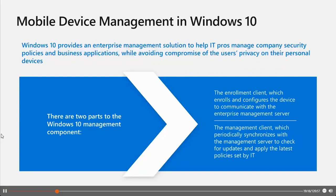We divide Windows 10 management components into two parts. The first is the management client, which periodically synchronizes with the management server to check for updates and applies the latest policies, Windows updates, and other functionalities on the device. The second is the enterprise management server, with which the enrollment client communicates for enrollment and configuration. Third-party MDM servers can also manage Windows 10 using the MDM protocol, and the built-in management client can communicate with a third-party server proxy that supports the protocols outlined in the documentation.